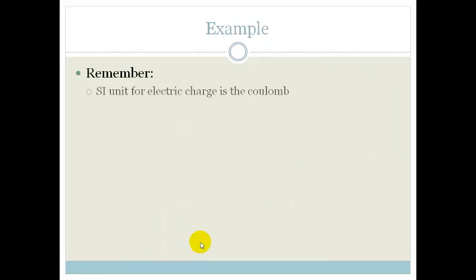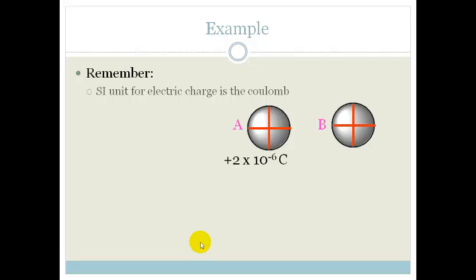So let's look at an example. Remember the SI unit for electric charge is the Coulomb. So we've got one little conducting sphere, A, and the other is B. A has a charge, a positive charge of 2 times by 10 to the minus 6 Coulombs. B has a positive charge of 3 times by 10 to the minus 6 Coulombs. We are going to bring them into contact.